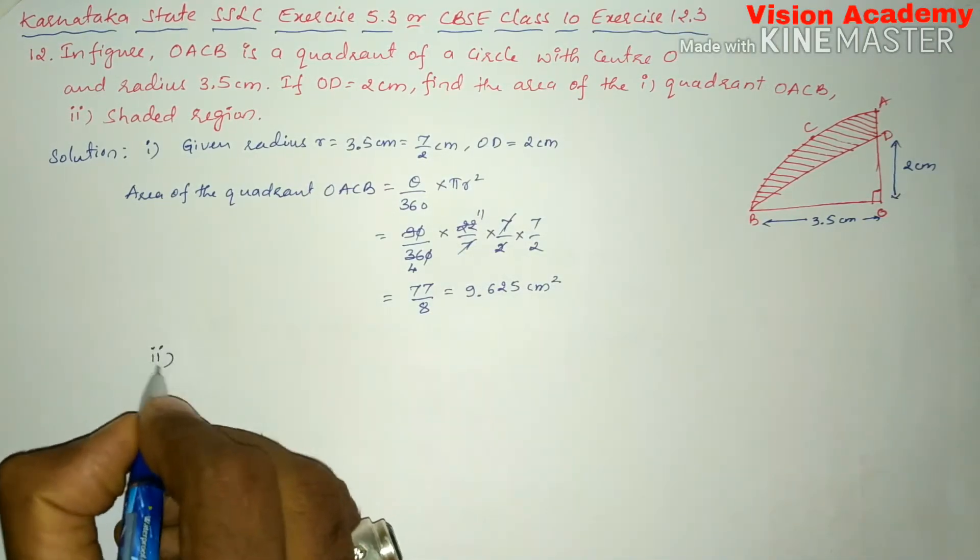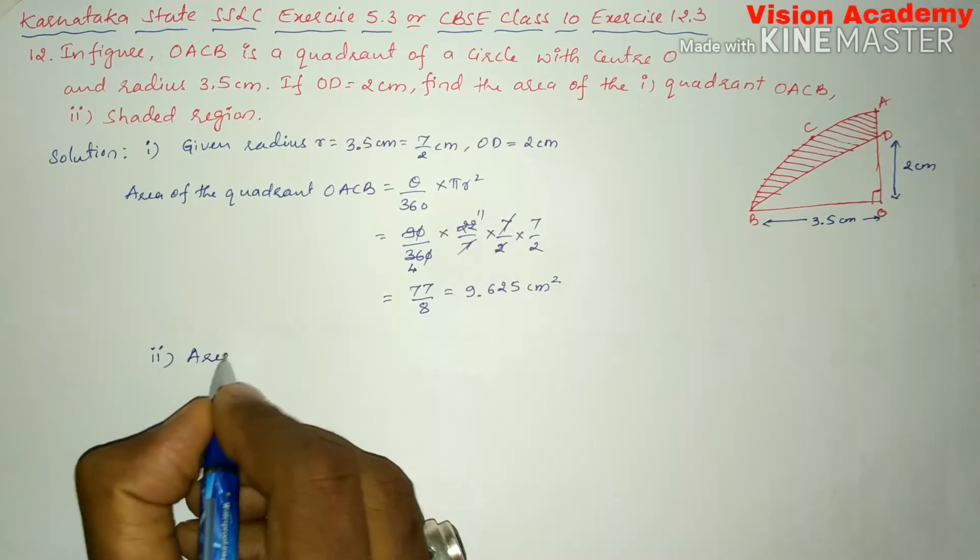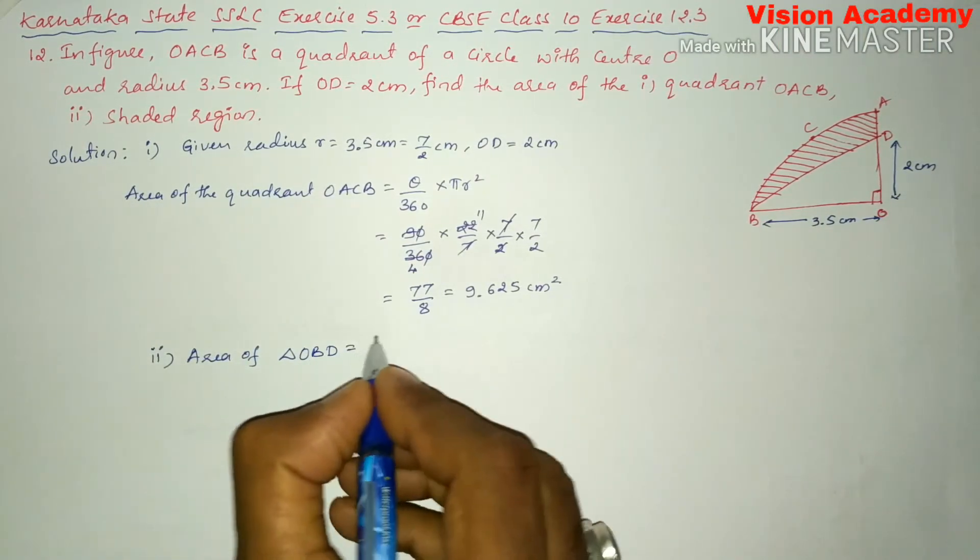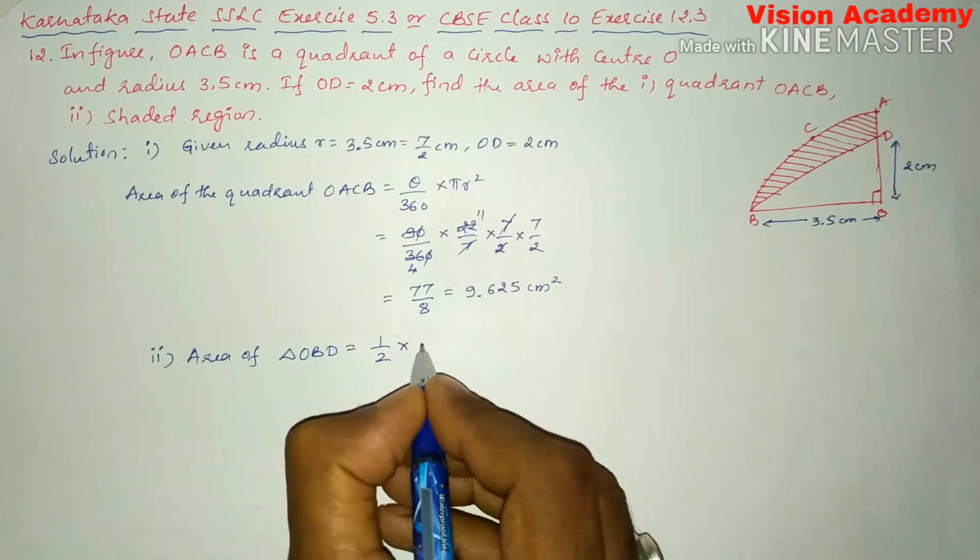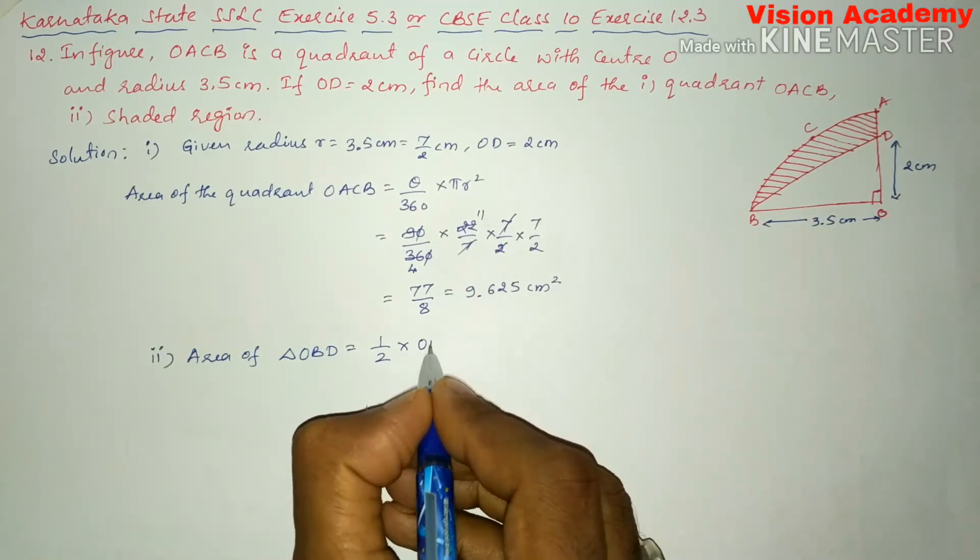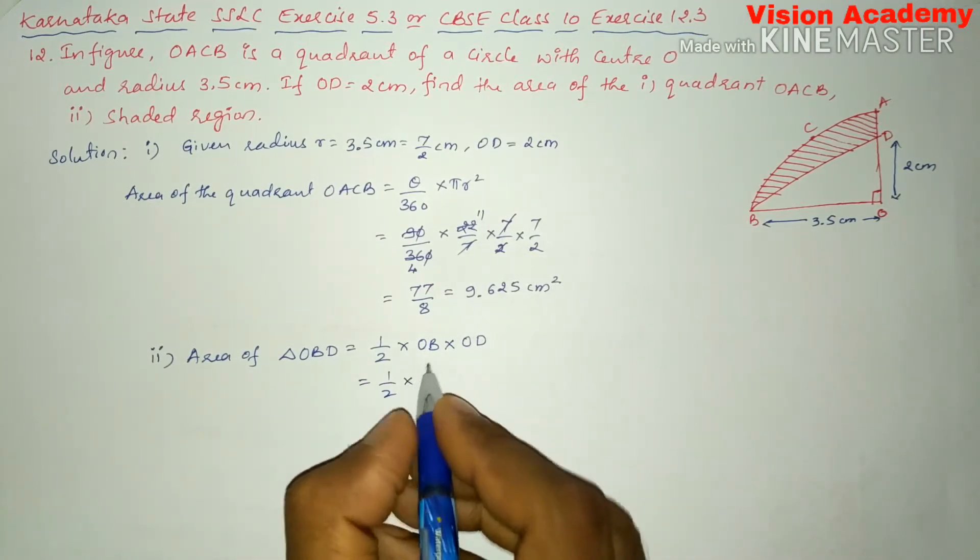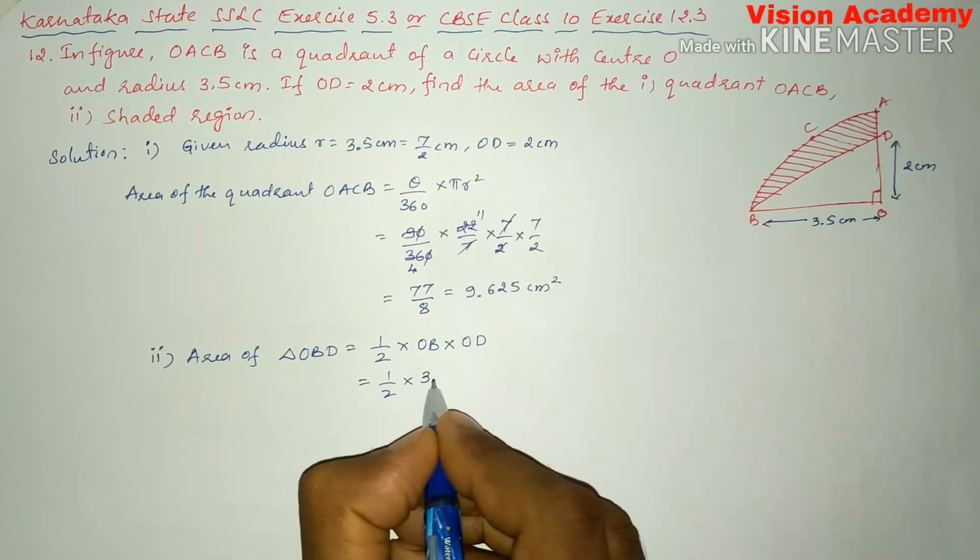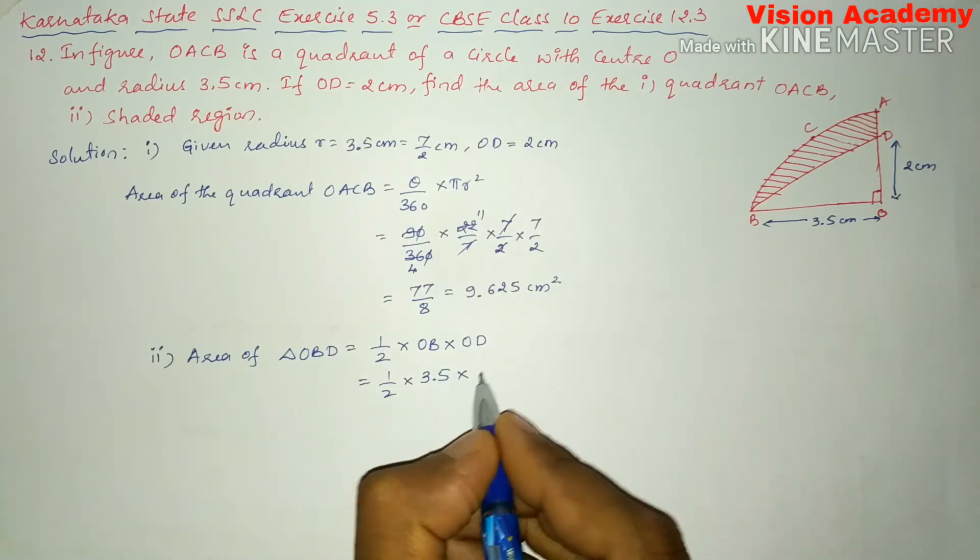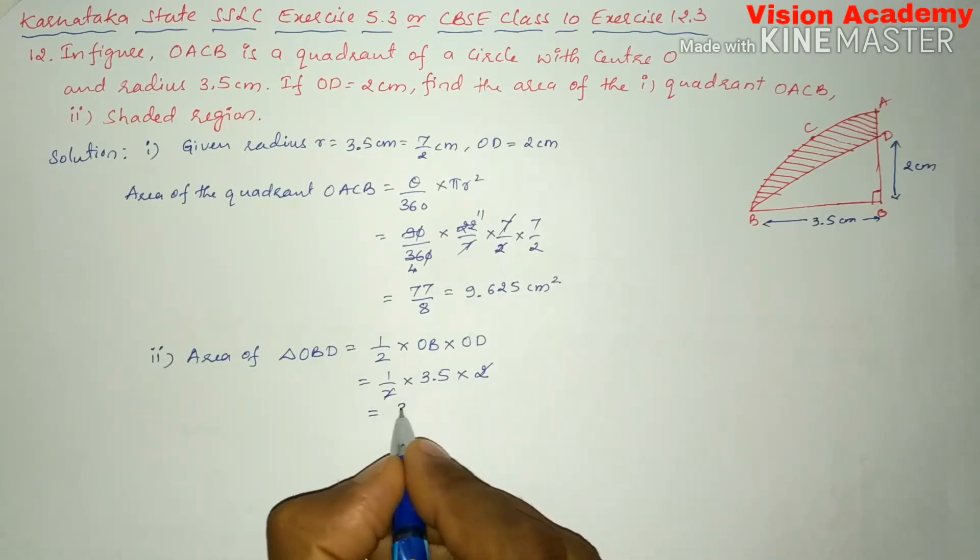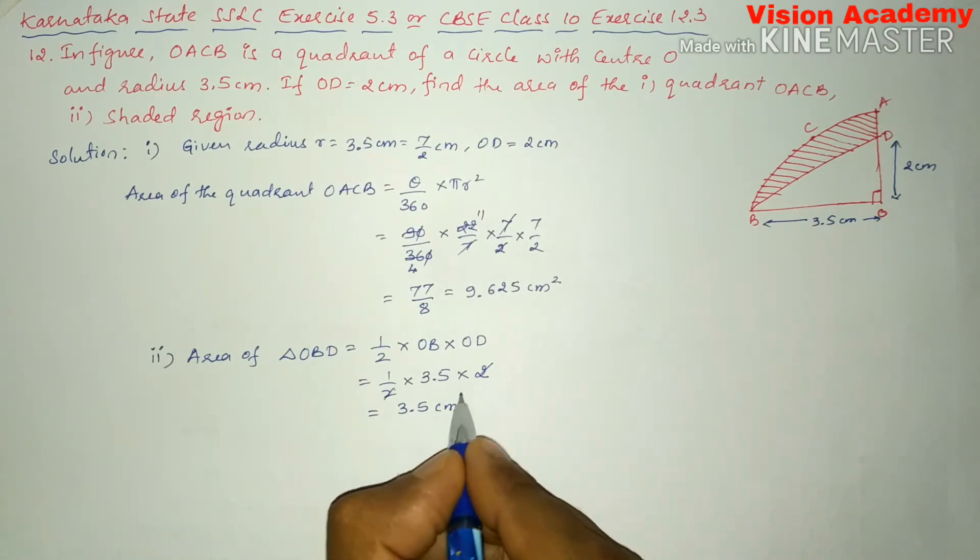Now, let us move on to Roman number 2. Area of triangle OBD is equal to half base into height. Base is OB and height is OD. Here, 1 by 2 into OB, the radius which is 3.5 cm, into OD, which is 2 cm. So the 2s will get cancelled. We remain with 3.5 cm squared.